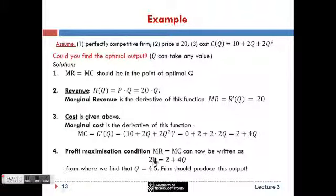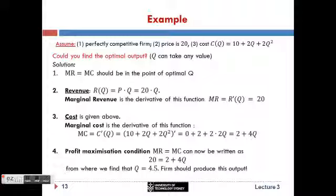Let's write the profit maximization condition and substitute what we found: instead of marginal revenue we write 20, and instead of marginal cost we write 2 plus 4q. This gives an equation with respect to q. When we solve it, we find that q equals 4.5. So the firm should produce output 4.5 if it wants to maximize profit — that's the goal of the firm.